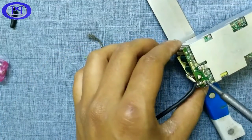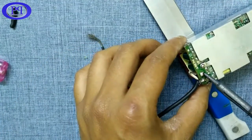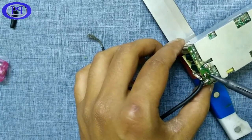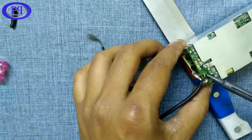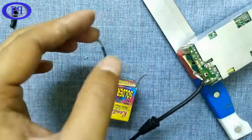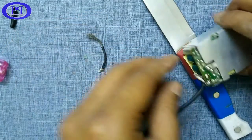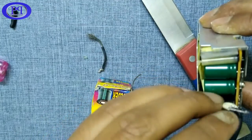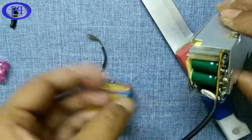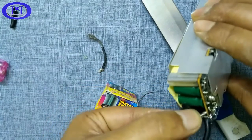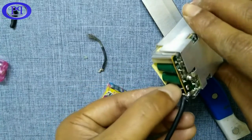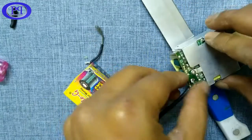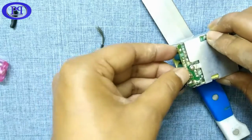First of all, I need to clean the hole. As you can see, the soldering element is inside the hole. I need to clear it up first to insert the wire in it. Okay, it's done.